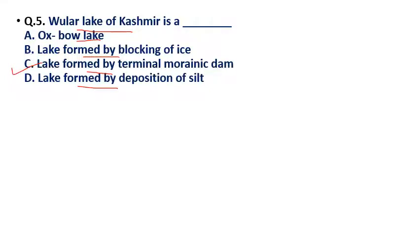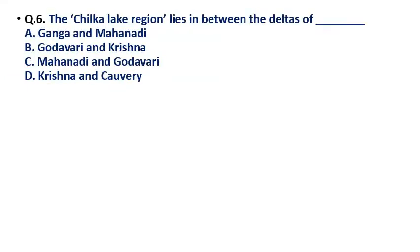Question 6: The Chilika region lies between the deltas of — (a) Ganga and Mahanadi, (b) Godavari and Krishna, (c) Mahanadi and Godavari, (d) Krishna and Kaveri. The correct answer for question 6 is option C — Mahanadi and Godavari. Chilika lies between the deltas of Mahanadi and Godavari.